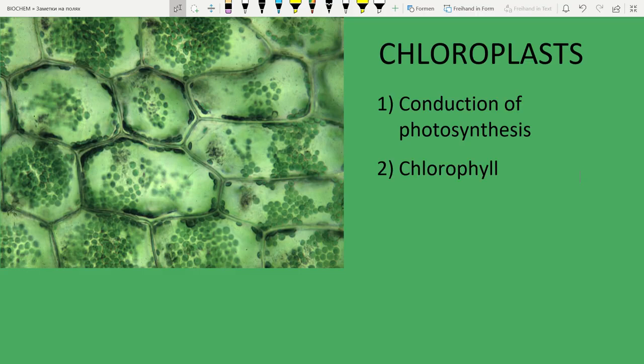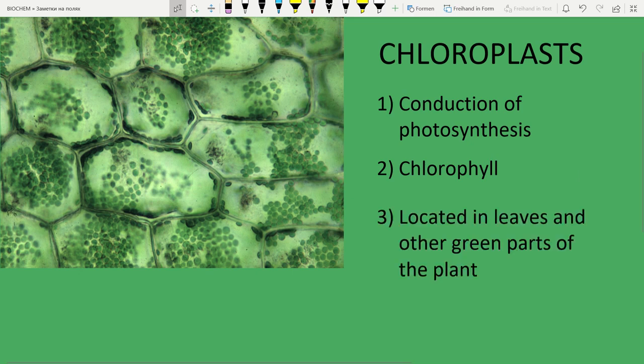Their green color is also caused by the chlorophyll, and chloroplasts are located in leaves and other green parts of the plant.